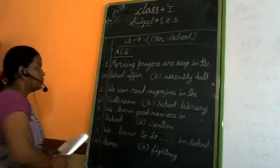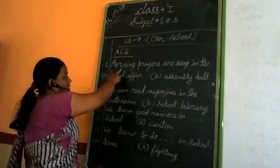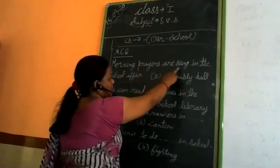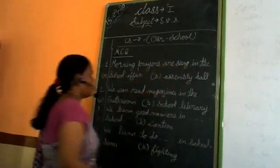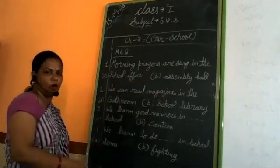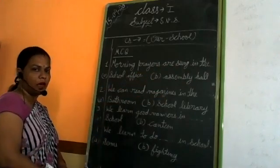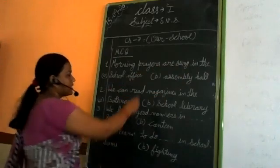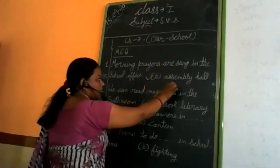Okay, MCQs. First. Morning prayers are sung in the... where do we do morning prayer? School office or assembly hall? Where is prayer done? Assembly hall. So correct answer is B, assembly hall.